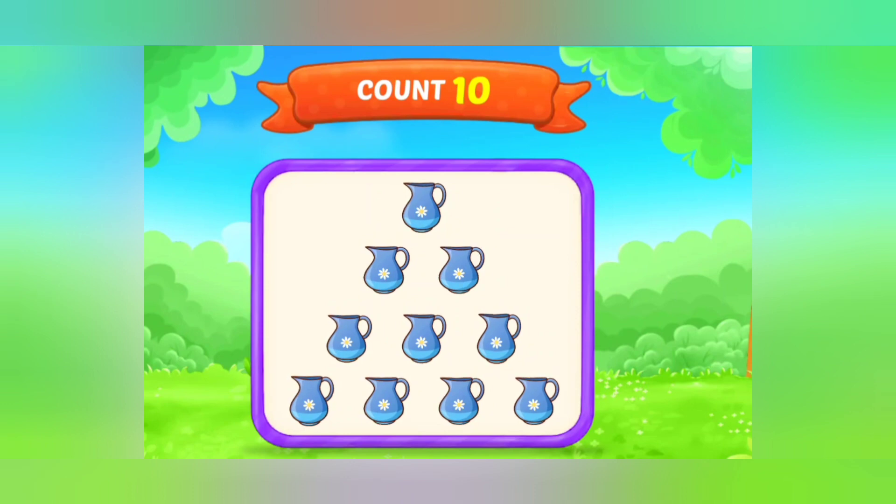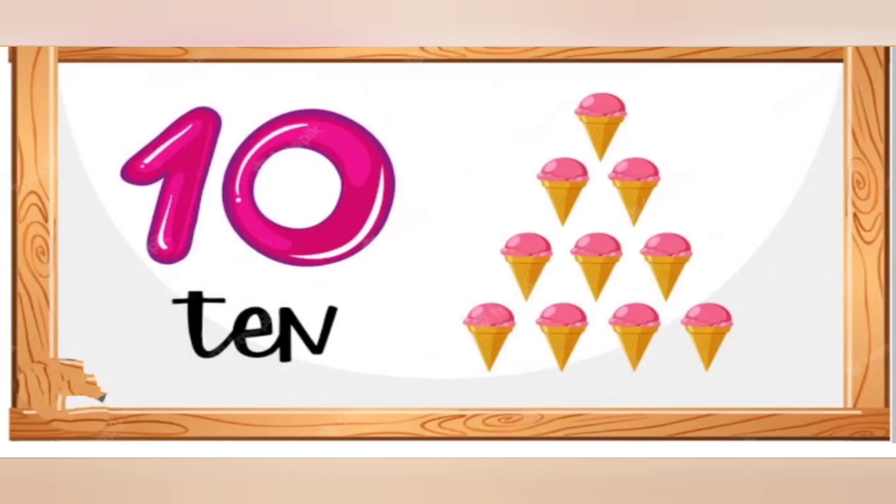Now, coming to the count. There are some ice creams. Shall we count one by one? 1, 2, 3, 4, 5, 6, 7, 8, 9, 10. So total how many ice creams are there? 10. Wow! It's very nice. We have to count line by line.